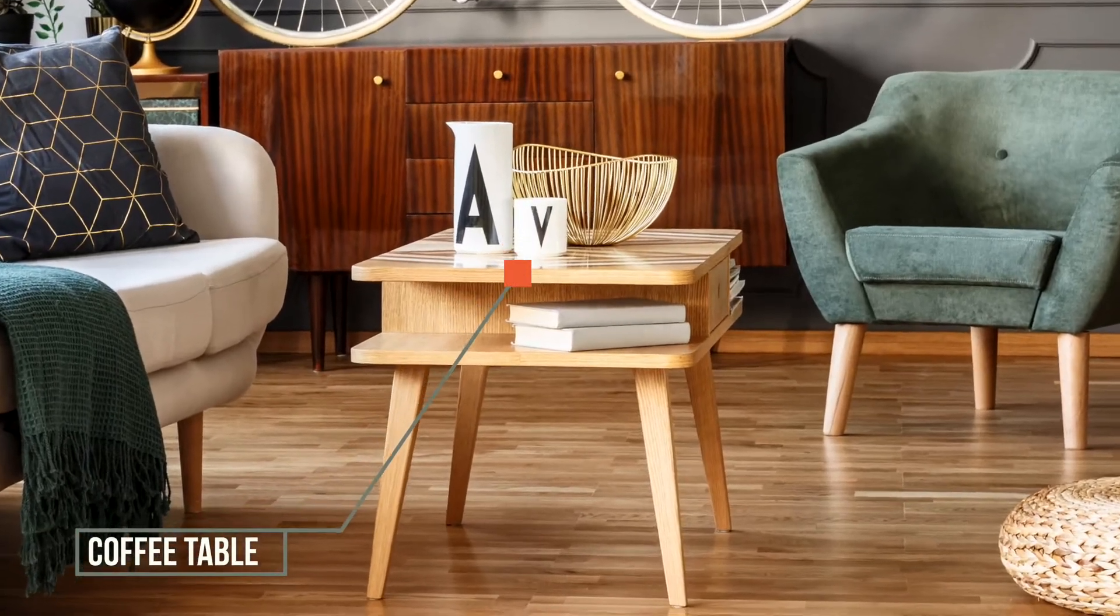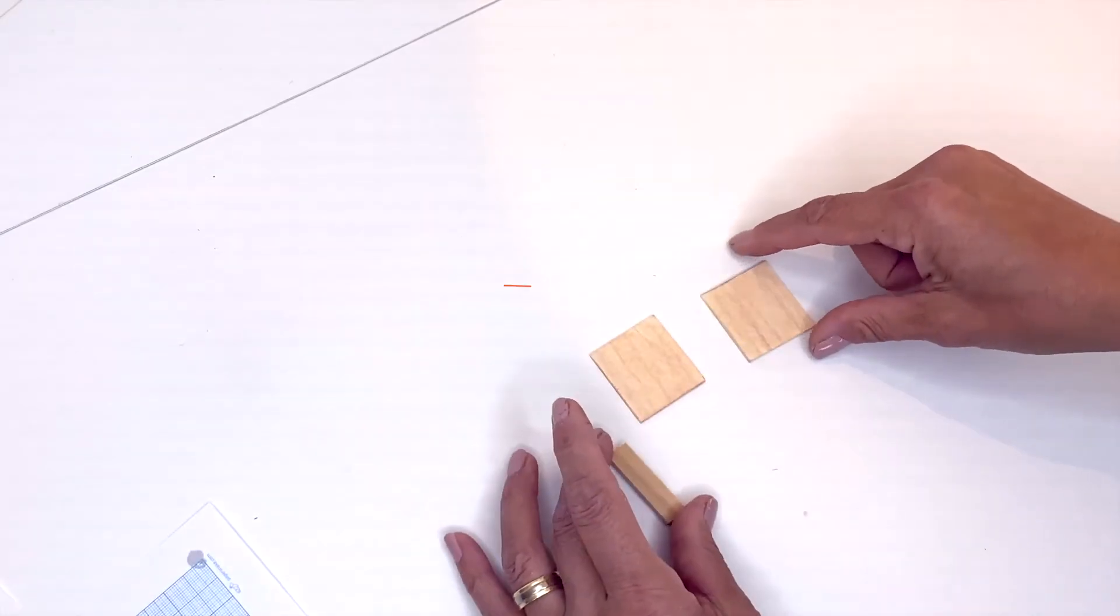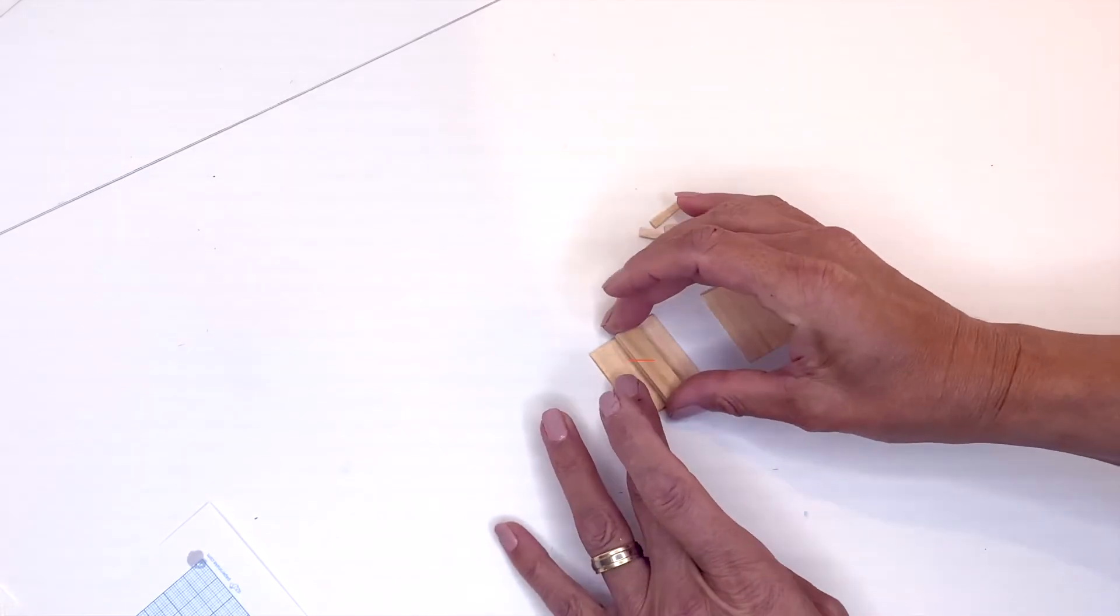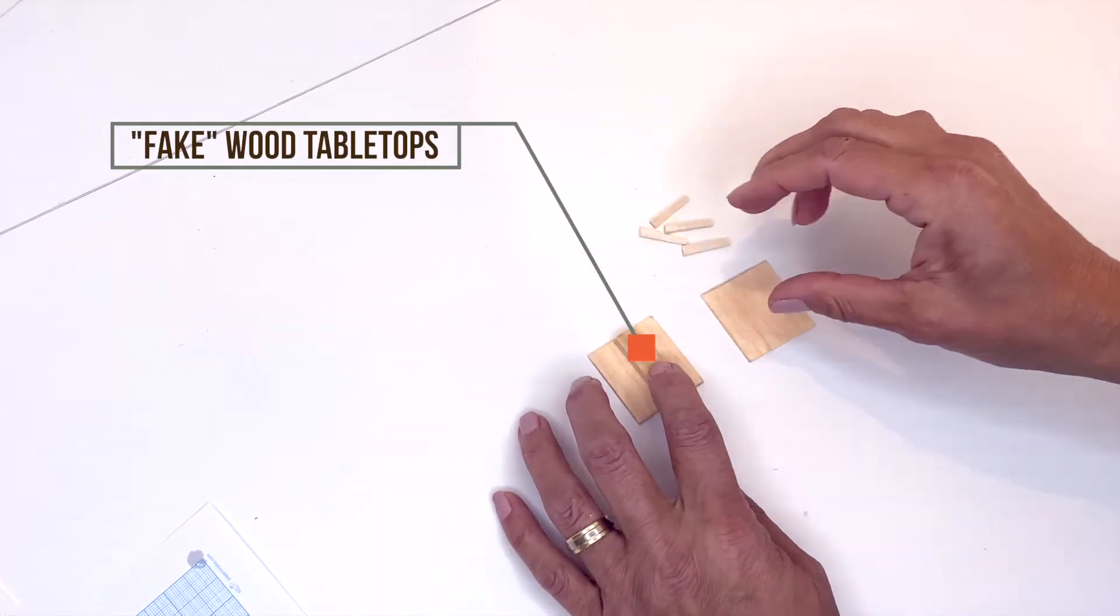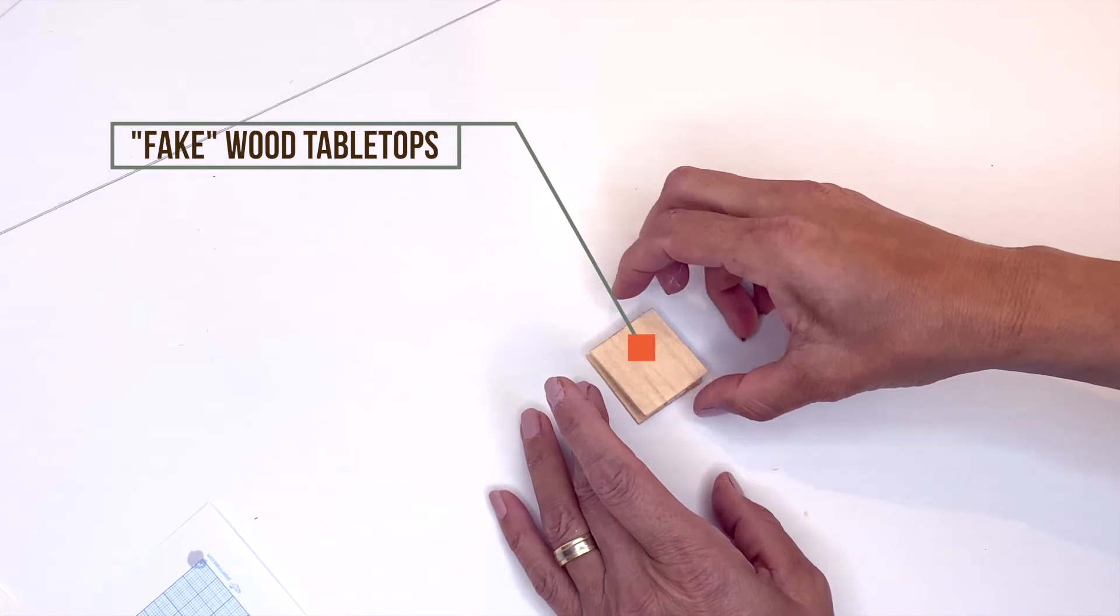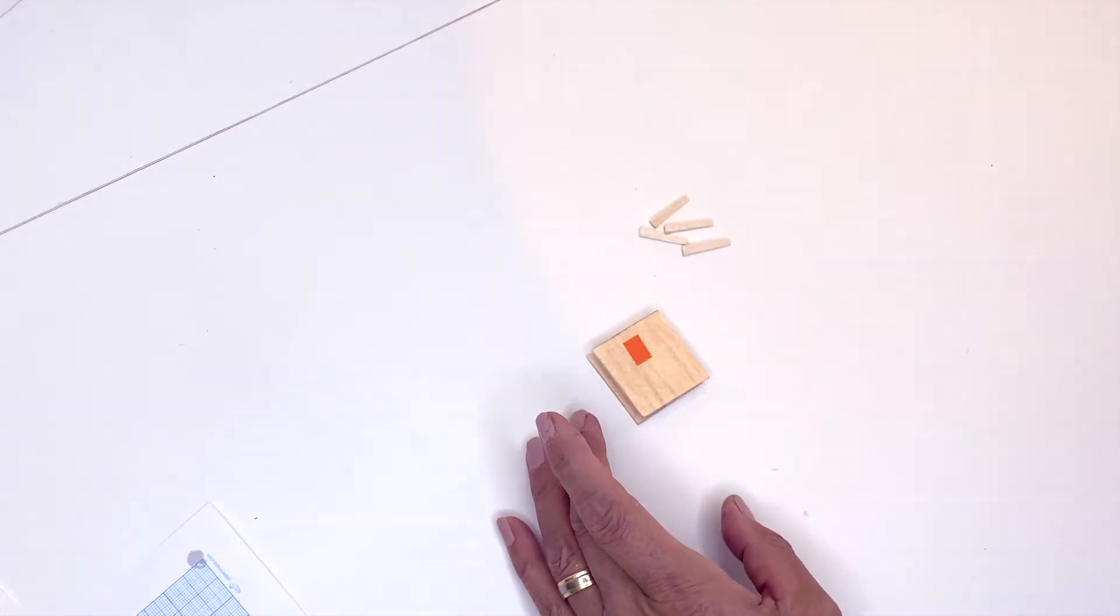This is the coffee table. I made legs from balsa wood. The table tops are made of matte board with painted wood structure. Finish with a coat of clear paint.